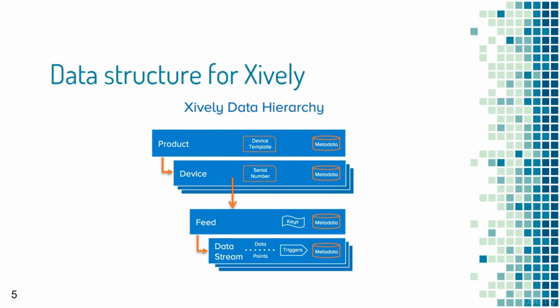In the Xifli hierarchy, a product is like a class in object-oriented programming, while a device is an instance of that class. For example, you create a skeleton for a product and then create 1000 devices from this skeleton. The devices push data to a feed associated with a user account, and the feed can have multiple data streams where each data stream represents a physical quantity, such as a temperature sensor. Each data stream contains data points with timestamps.